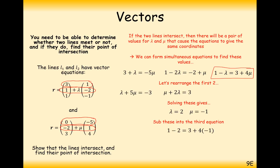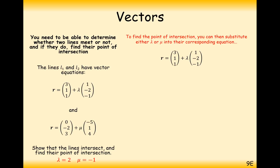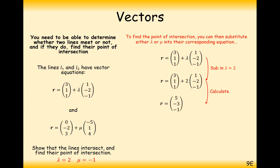Into the third equation we go, substitute in, and we get minus 1 on both sides. So we are going to have two intersecting lines, specifically at the values lambda equals 2 and mu equals minus 1. To find the point of intersection, we substitute lambda equals 2 into the equation of the line and get 5, minus 3, minus 1. You should get the same answer substituting mu equals minus 1 into the second equation.